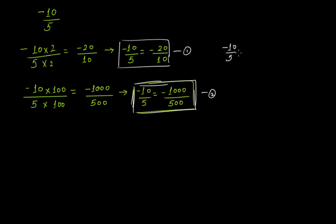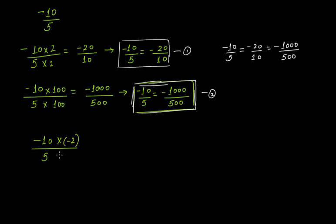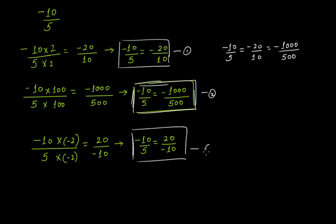Minus 10 over 5 is equal to minus 20 over 10 is equal to minus 1000 over 500, because these are all equivalent rational numbers. Now, for the interesting part: if I multiply minus 10 over 5 by minus 2, it becomes 20 over minus 10. So minus 10 over 5 is equal to 20 over minus 10, because these two are equivalent rational numbers.